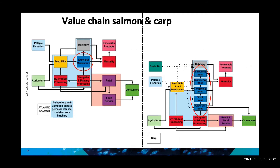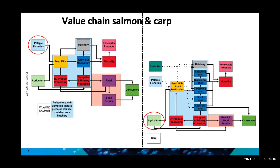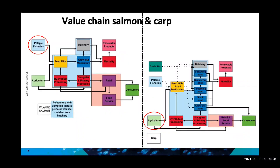This leads to the first main difference between the two value chains: the grow-out phase. For salmon, the fish grow in the same cage for the whole production cycle except spawning and smoltification. For carp there are many manipulations. The second key difference is that salmon relies on formulated feeds using marine ingredients from pelagic fisheries, while carp relies mainly on agriculture — the main additional feed source is grains such as triticale or wheat, depending on market price.